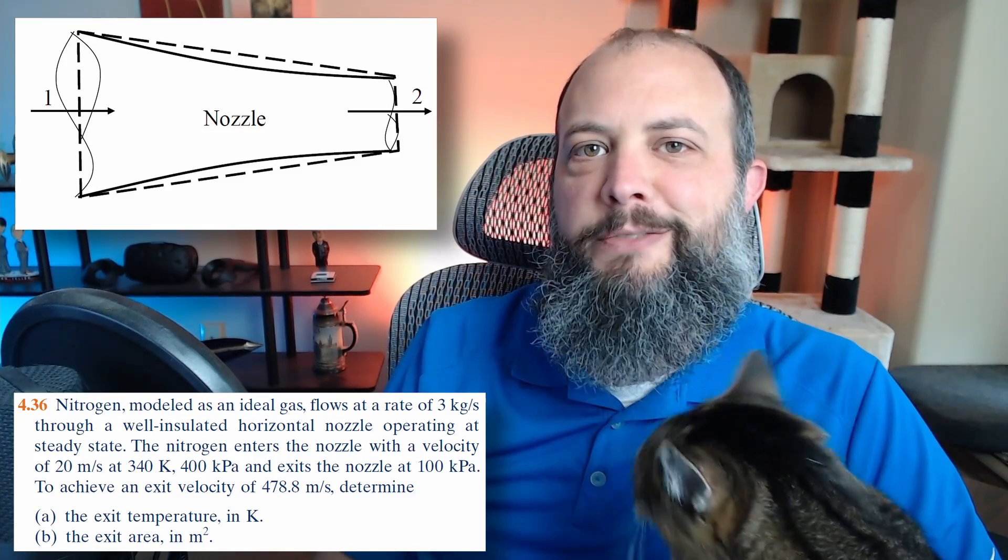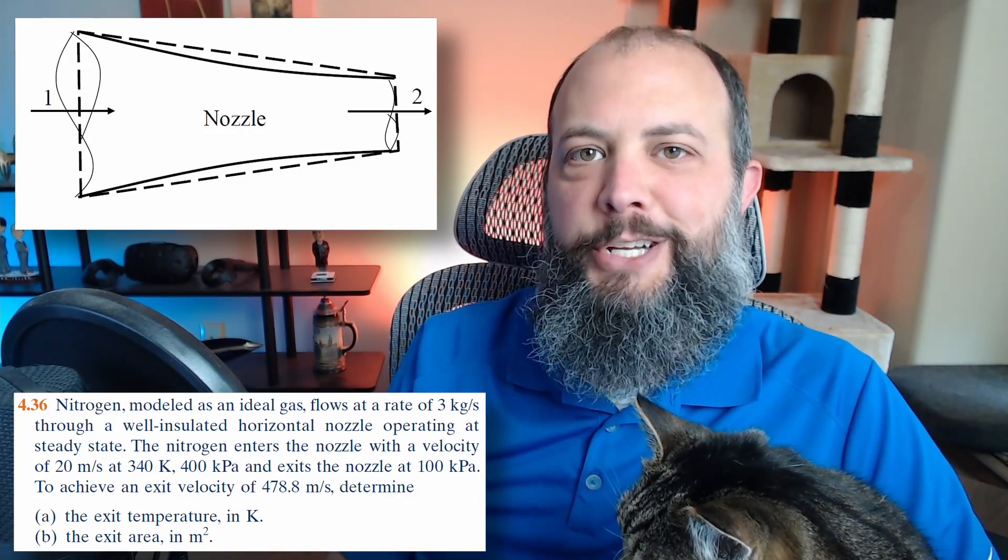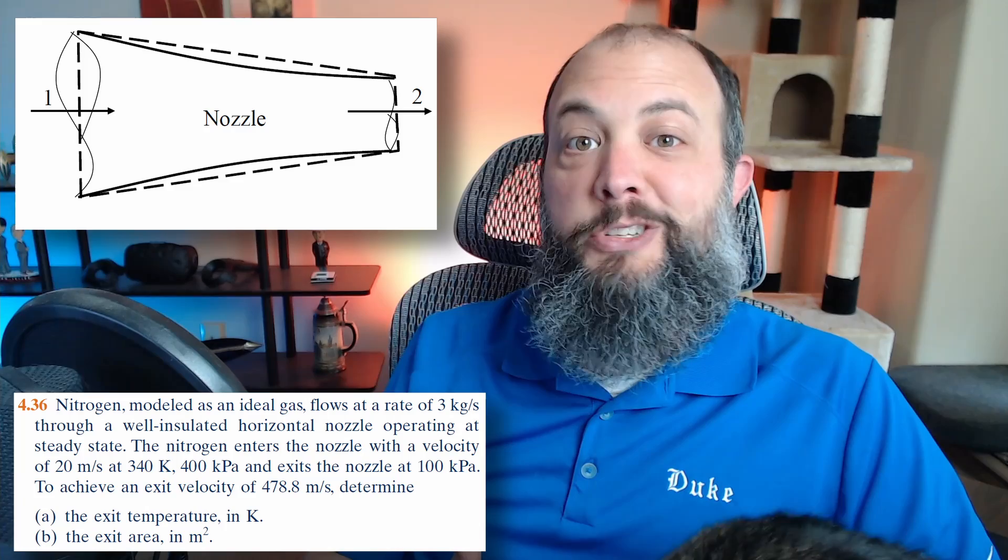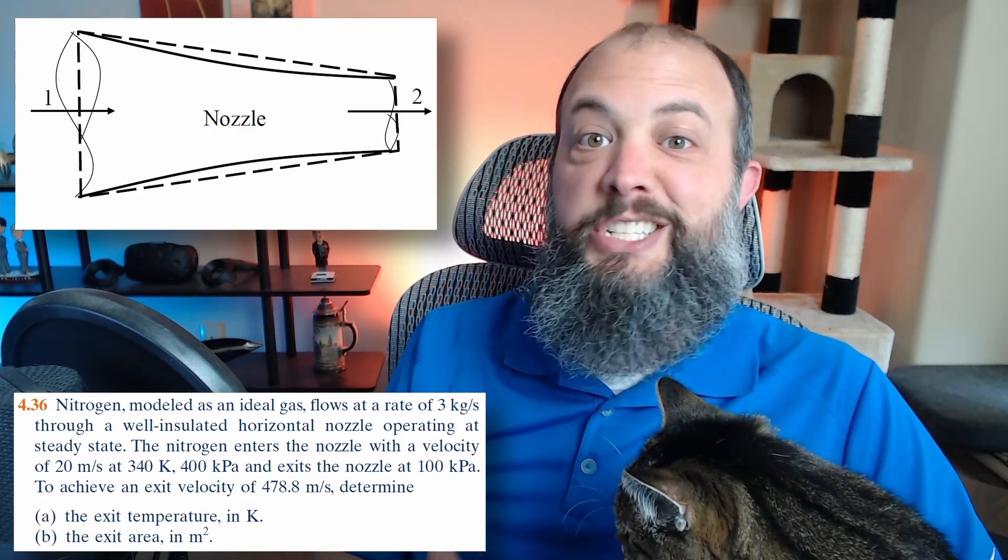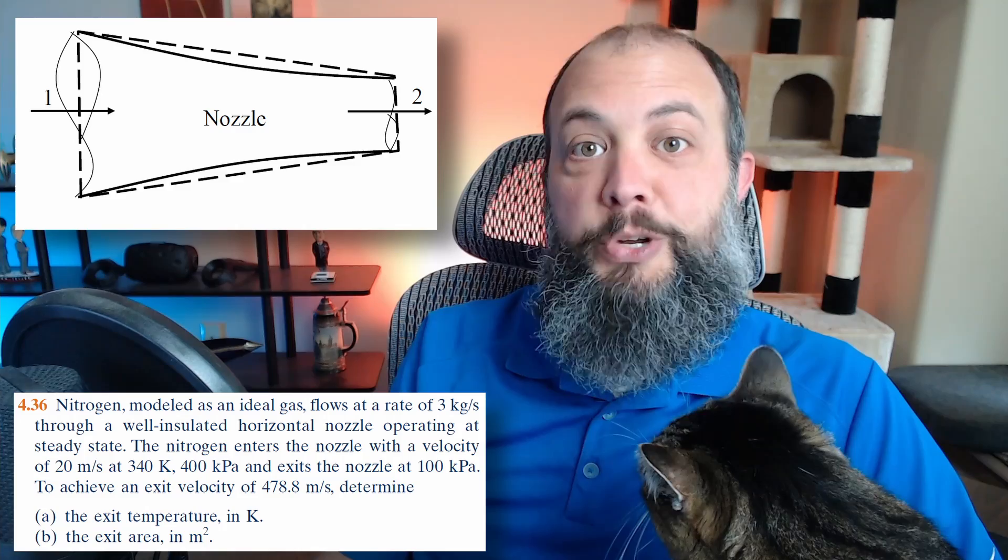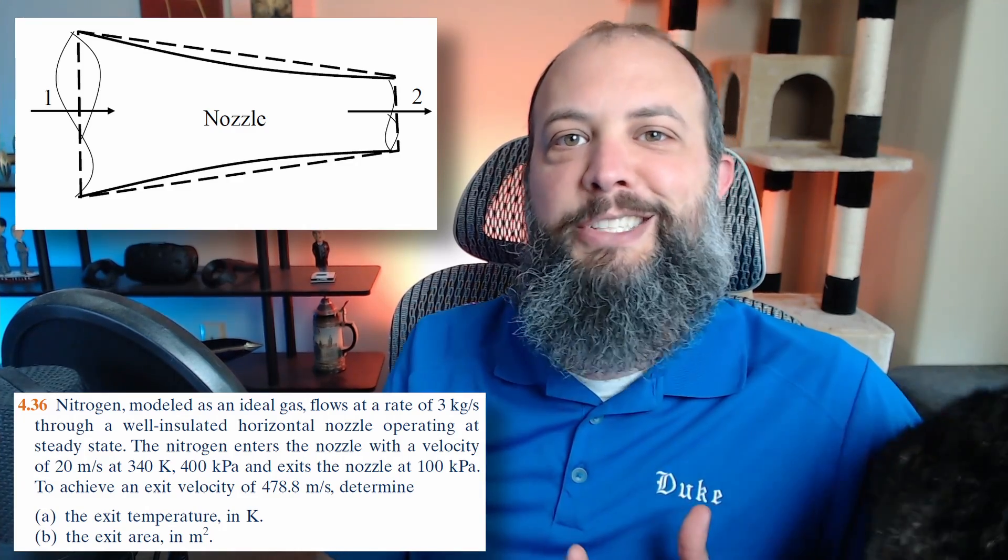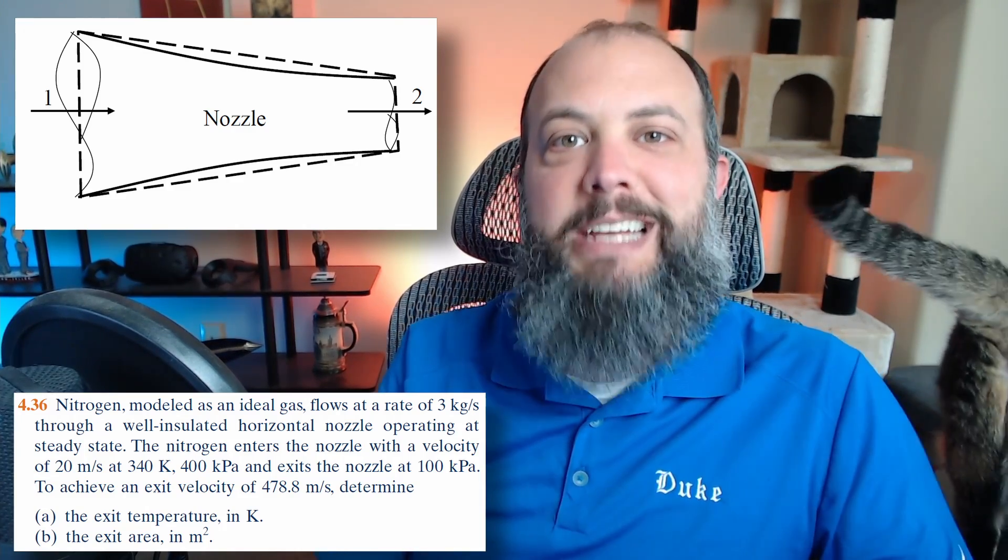All right, today I'm joined by my TA Serenity for this Nozzle Thermodynamics video. She herself is much more similar to a diffuser, because even though she's being kind of active right now, she generally becomes very slow, and that's the purpose of a diffuser - to take something that comes in fast and slow it down.